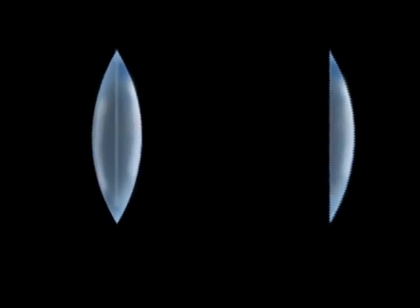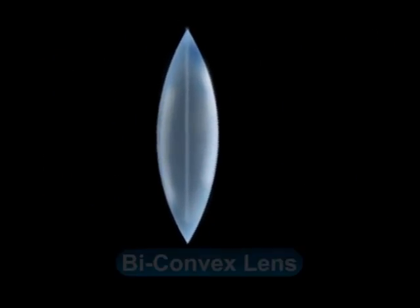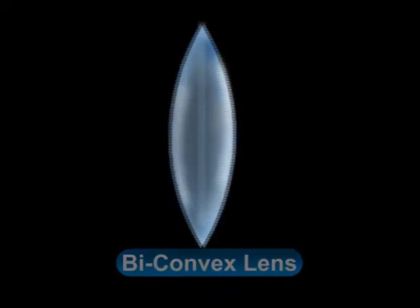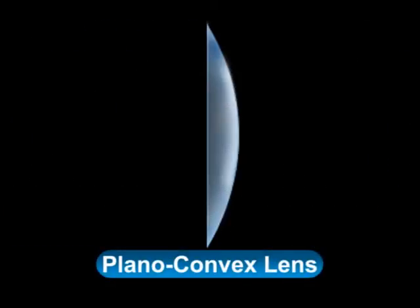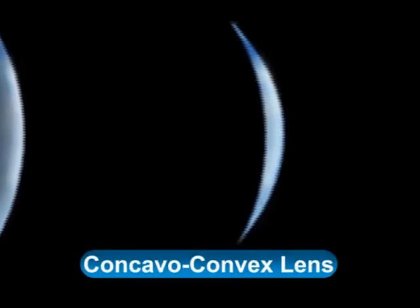The three types of convex lenses are a biconvex lens, a pleno-convex lens, and a concavo-convex lens.